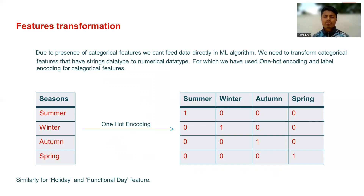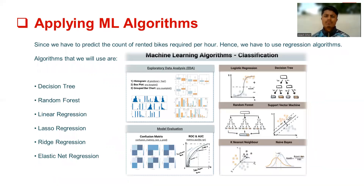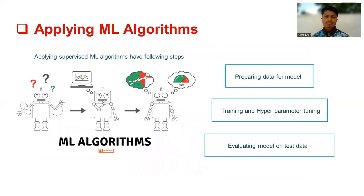Similarly, label encoding was applied for the holiday and functional day features. For applying ML algorithms: since we have to predict the count of rented bikes, we use regression algorithms. The algorithms used are decision tree, random forest, linear regression, lasso regression, ridge regression, and elastic net regression. Applying supervised ML algorithms involves the following steps: preparing data for the model, training and hyperparameter tuning, and evaluating the model on test data.